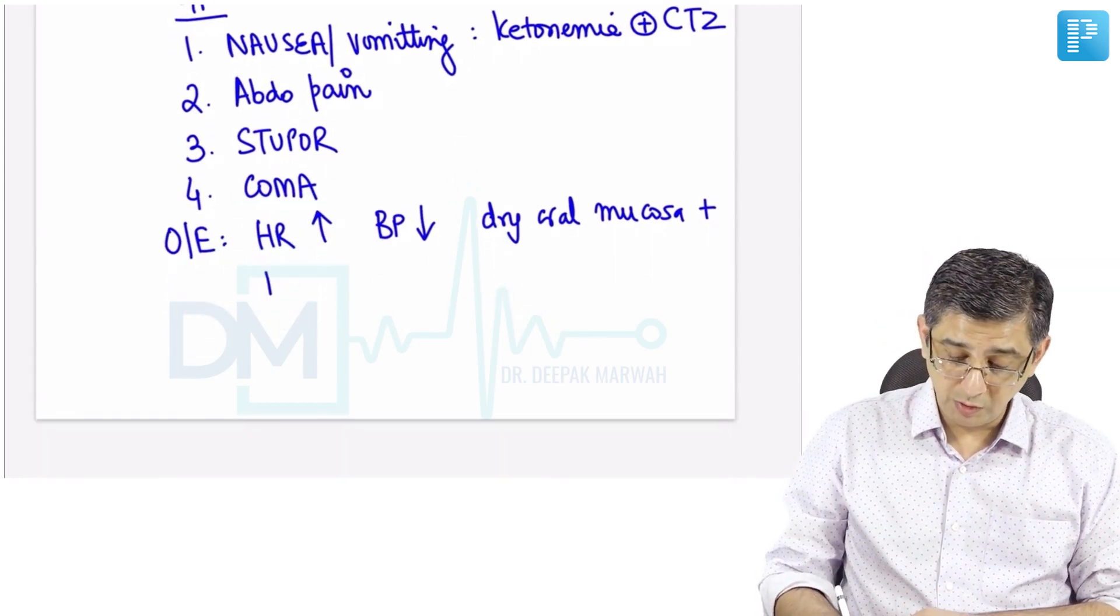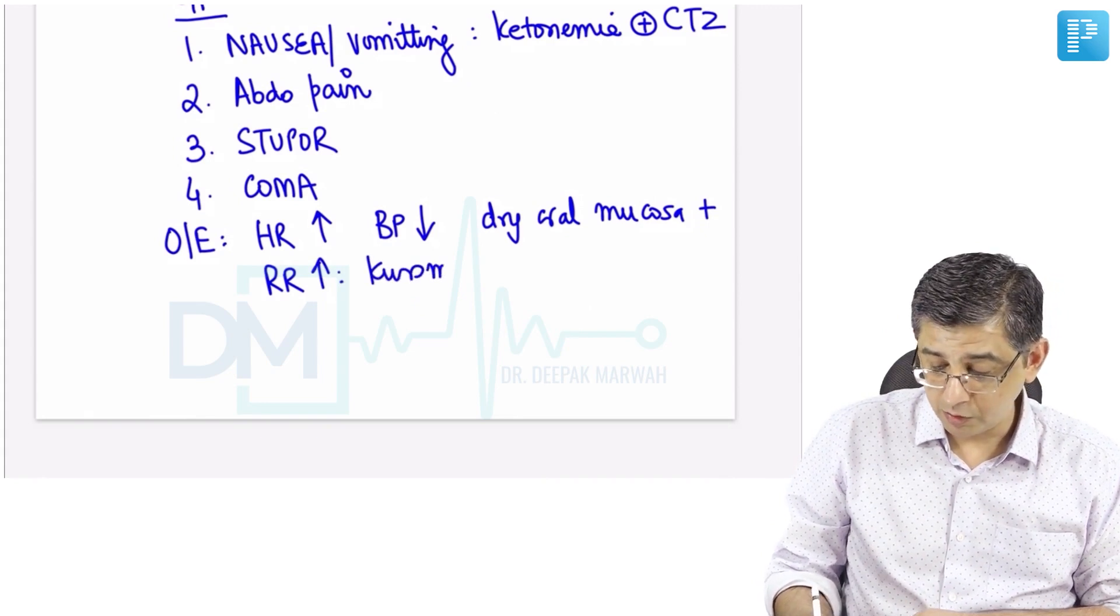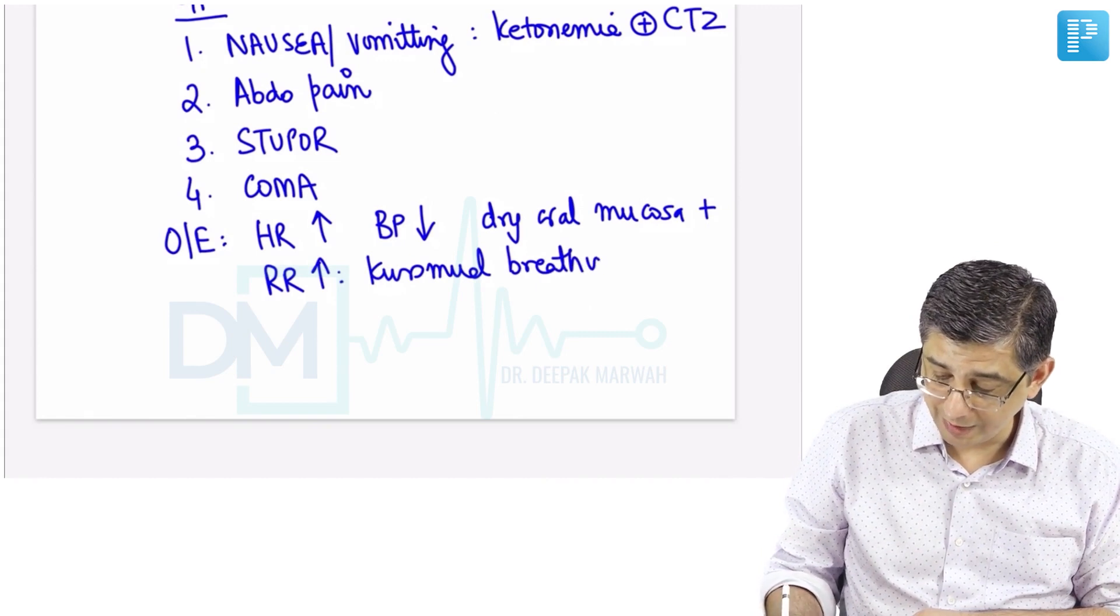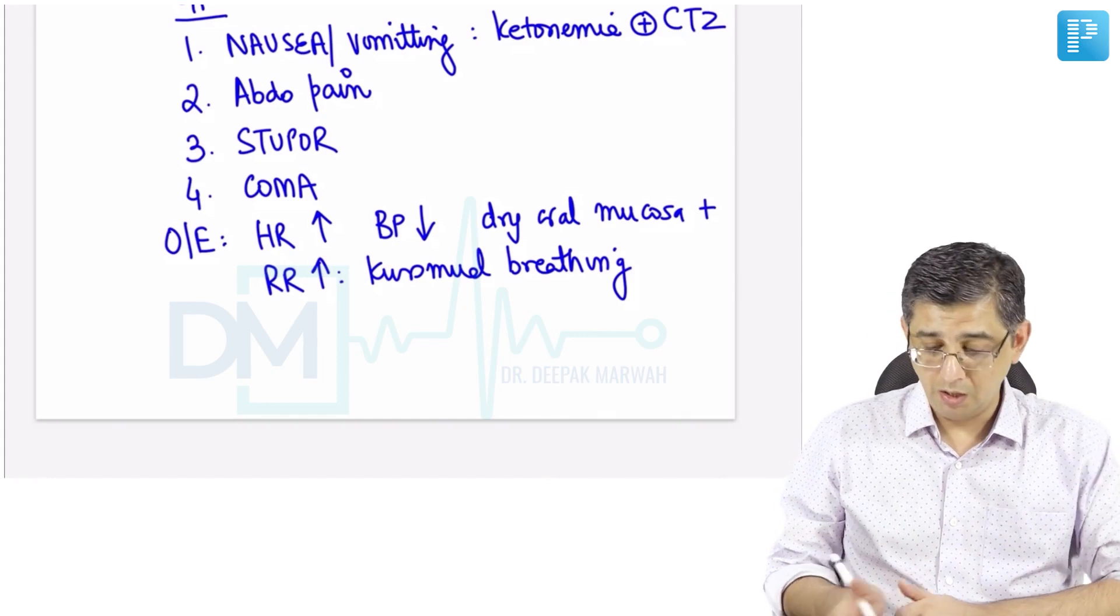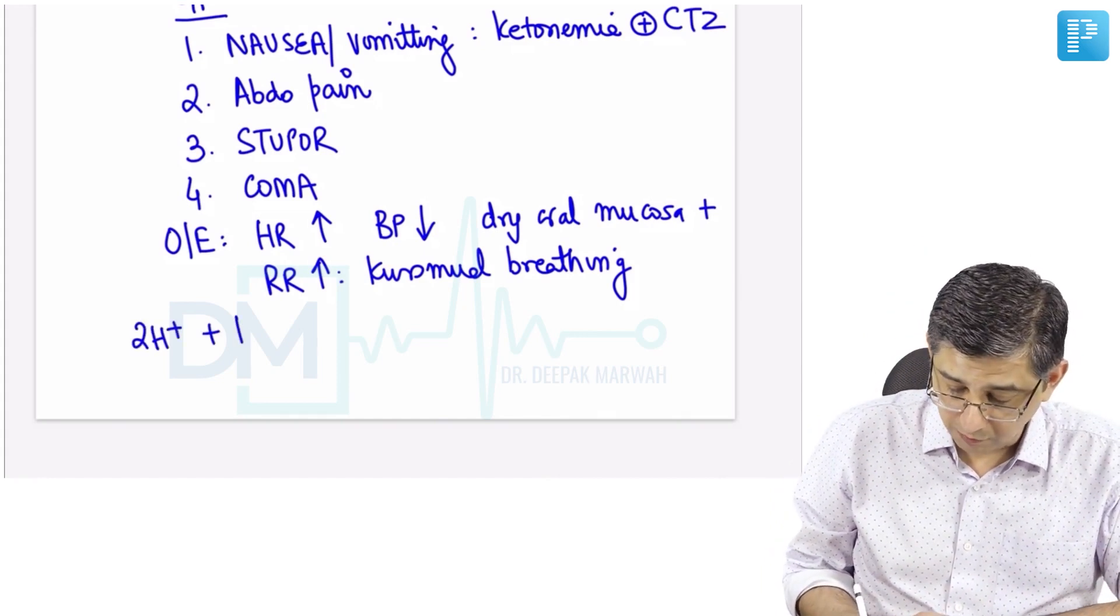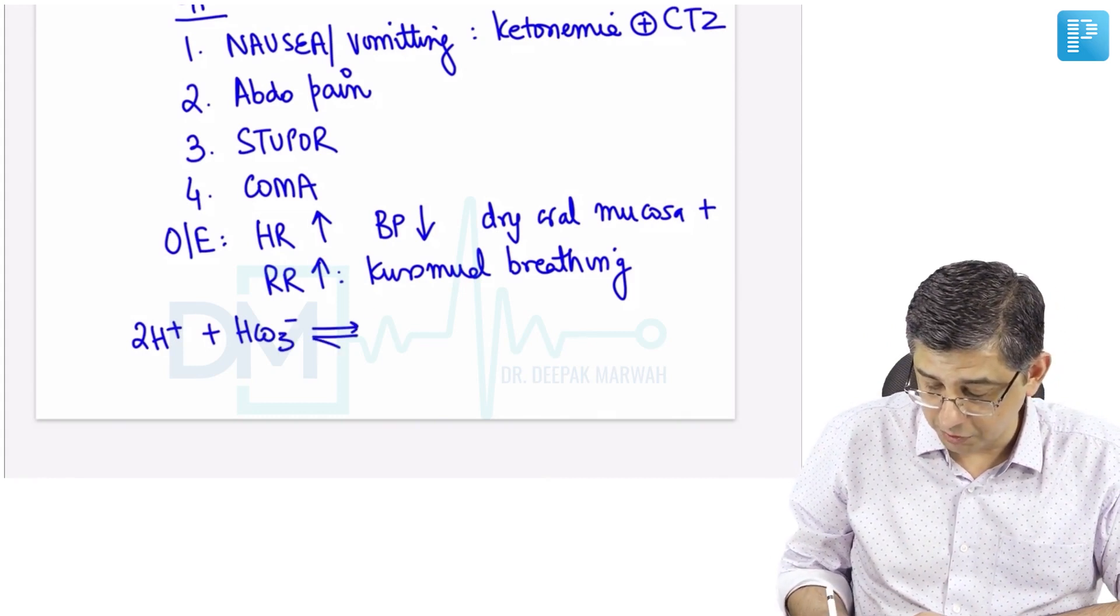You will notice that the patient will be having Kussmaul acidotic hyperventilation. This is the method of keeping this person alive, because when a person exhibits this acidotic hyperventilation it will cause washout of carbon dioxide from the body. I am writing a chemistry equation before you by which you will appreciate better why Kussmaul breathing is a method of compensation for these patients.